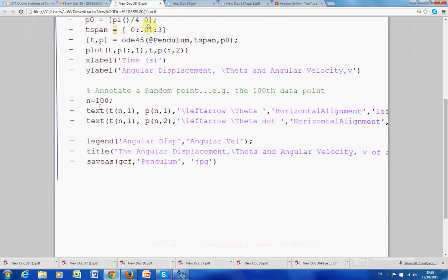So, the displacement is pi over 4. And the second out here, the zero, is for the velocity. Okay. So, the time span is 0 to 3 in steps of 0.01.